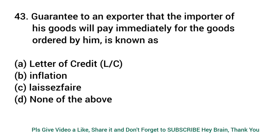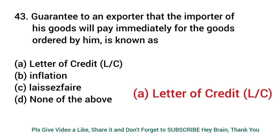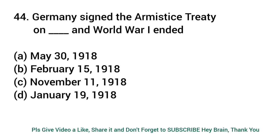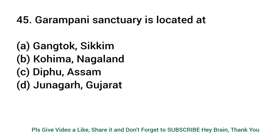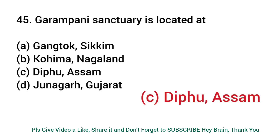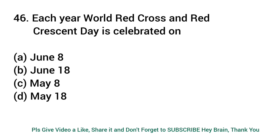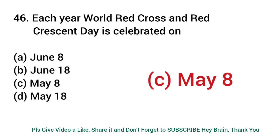Guarantee to an exporter that the importer of his goods will pay immediately for the goods ordered by him is known as? Answer: Letter of Credit. Germany signed the Armistice Treaty and World War I ended on? Answer: November 11, 1918. Garam Pani Centauri is located at? Answer: Dipahu, Assam. Each year World Red Cross and Red Crescent Day is celebrated on? Answer: May 8.